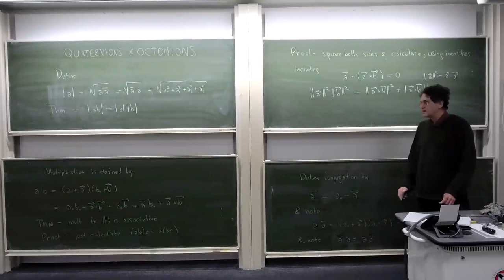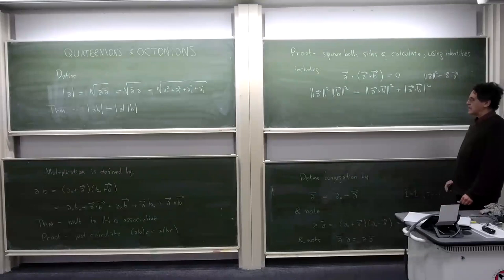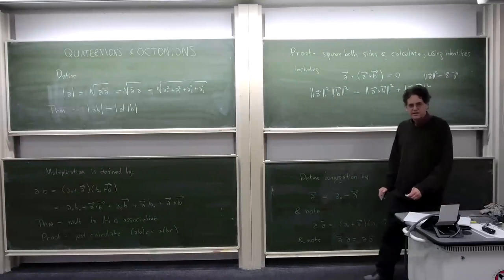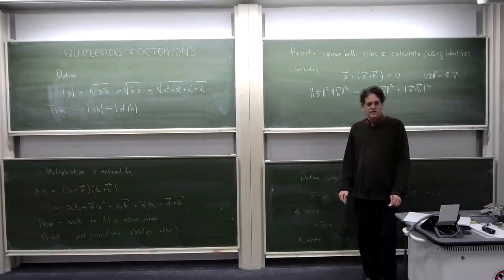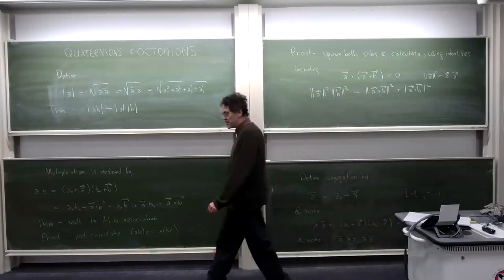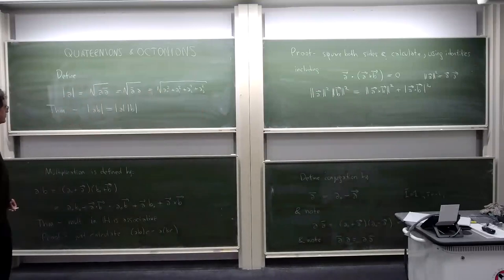A question from the audience: are the theorems about associativity and norm preservation easier or harder using the original i, j, k definition versus the scalar-vector formula? The answer: try it both ways and see which is easier for you.